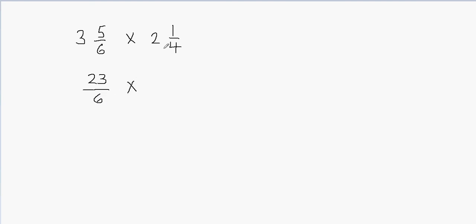Then we're going to multiply 2 and 4. 2 times 4 gives me 8. 8 plus 1 gives me 9. So I got 9 here for the numerator, and for the denominator we're going to write 4 because we don't change our denominator.